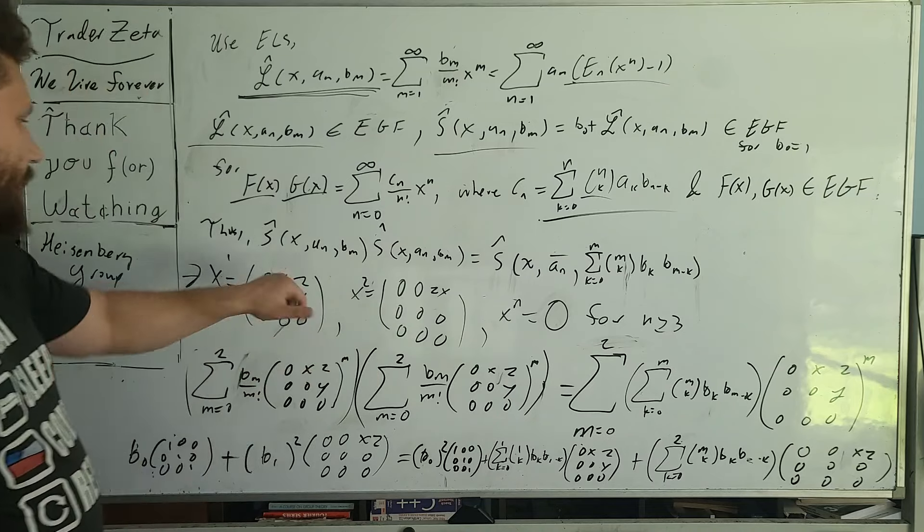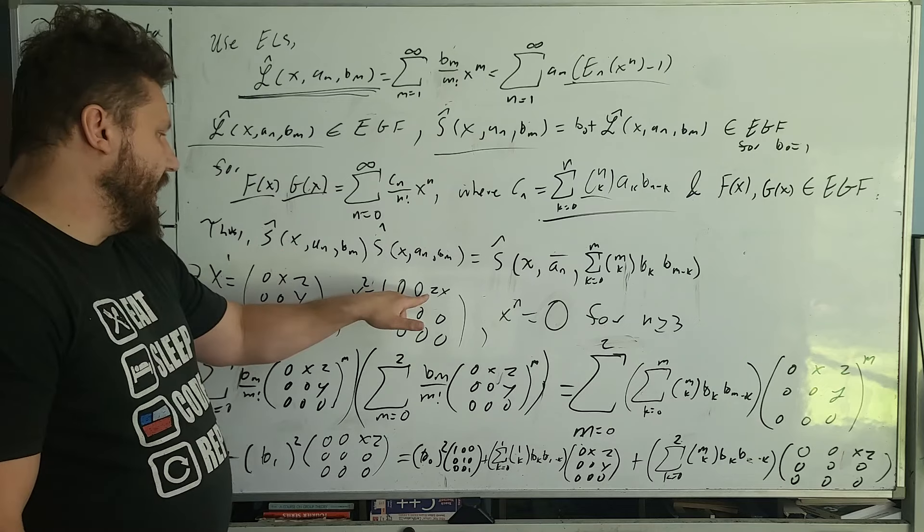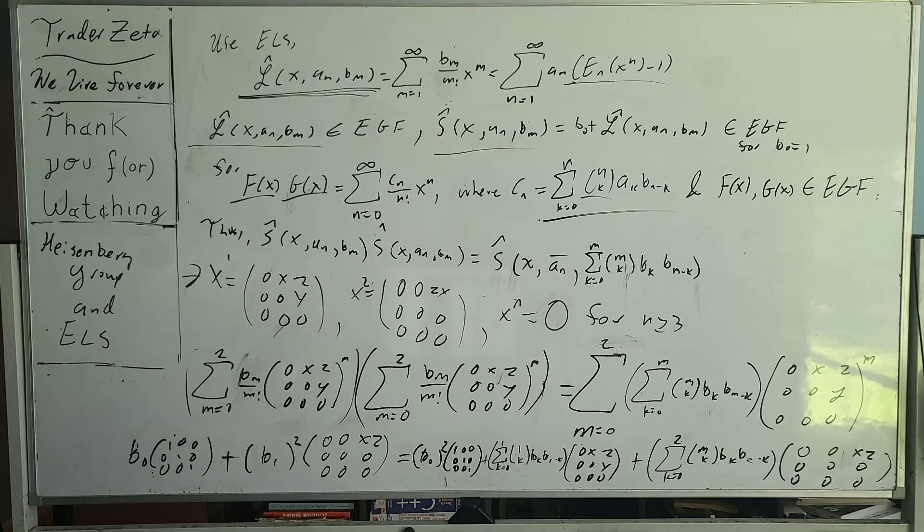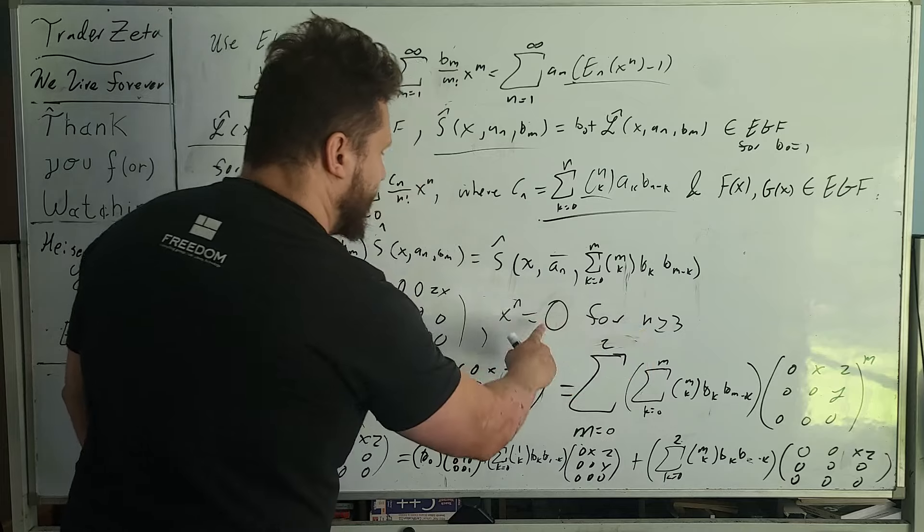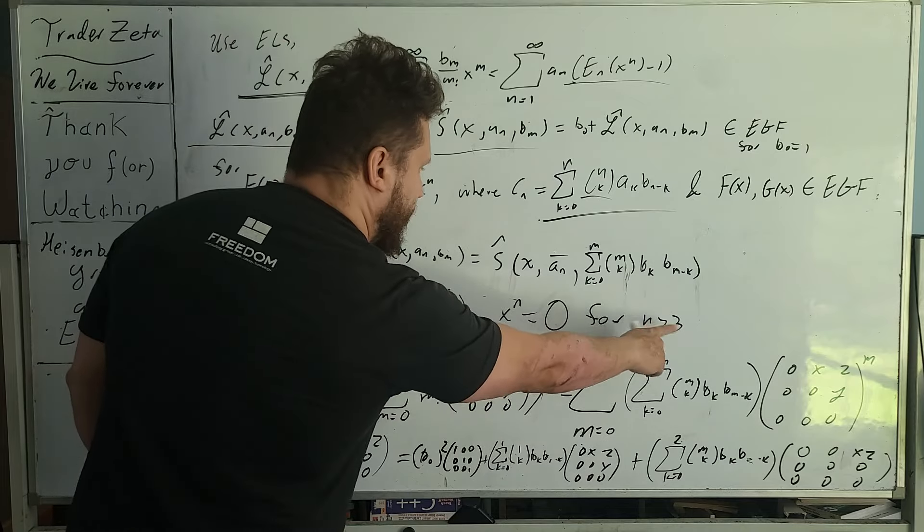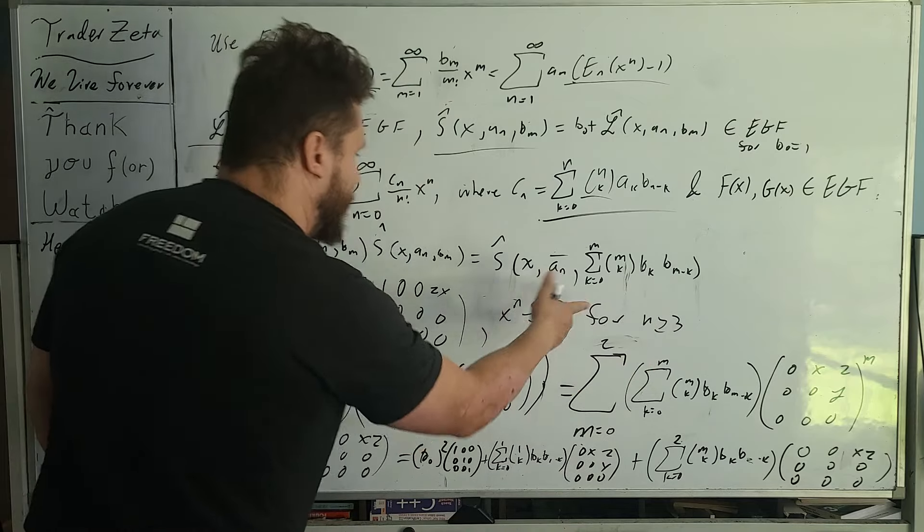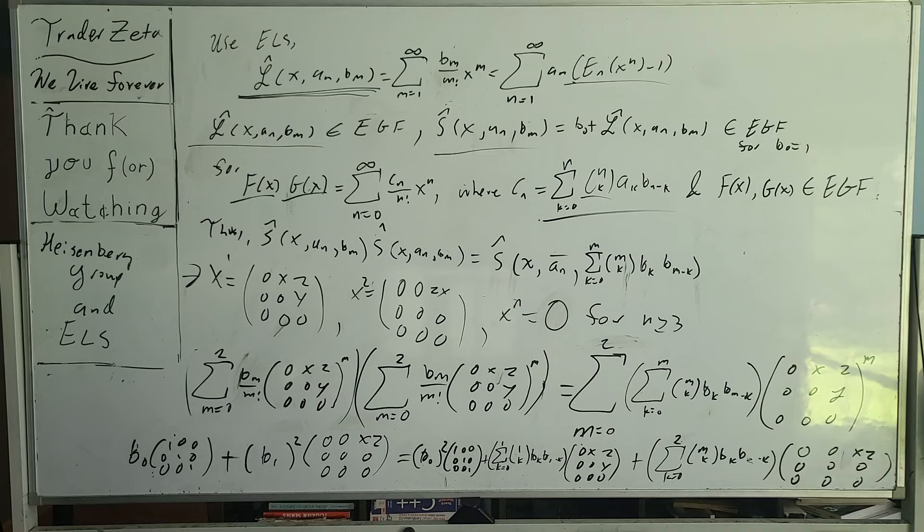And we are going to particularly look at this matrix, x1. And you have 0xz, 0, 0y. I mean, you can read it. So x squared is going to be, where you square this matrix, is just going to have zx. And anything higher than n greater than or equal to 3 is going to be 0. So it's going to annihilate a whole bunch of stuff.